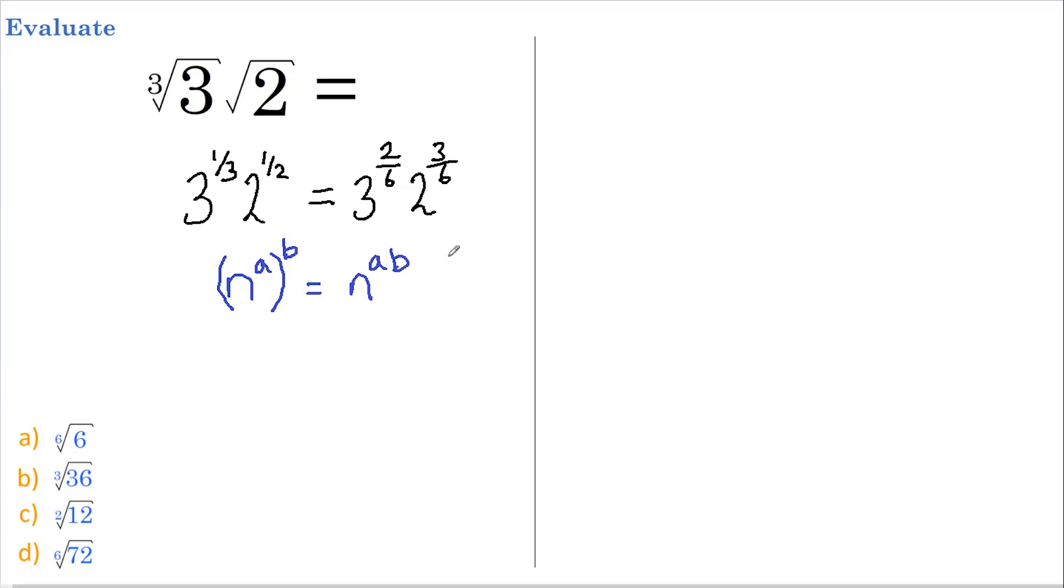If we think of 3 to the power of 2/6 as 3 to the power of 2 multiplied by 1/6, and 2 to the power of 3/6 as 2 to the power of 3 times 1/6, then we can use this formula in reverse.